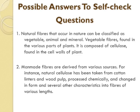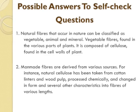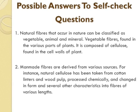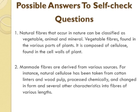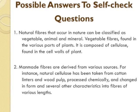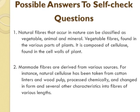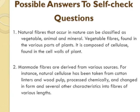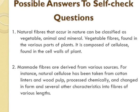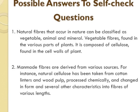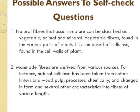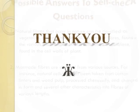Vegetable fibers are found in various parts of plants and are composed of cellulose found in the cell wall of plants. The second question was on man-made fibers. Man-made fibers are derived from various sources. For instance, natural cellulose has been taken from cotton linters or wood pulp, processed chemically and changed in form and several other characteristics into fibers of various lengths. I am quite sure you have all enjoyed this lesson and now have a good idea of what natural fibers and man-made fibers are. Thank you and take care.